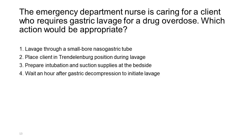The emergency department nurse is caring for a client who requires gastric lavage for a drug overdose. Which action would be appropriate? 1. Lavage through a small-bore nasogastric tube. 2. Place client in Trendelenburg position during lavage. 3. Prepare intubation and suction supplies at the bedside. 4. Wait an hour after gastric decompression to initiate lavage.